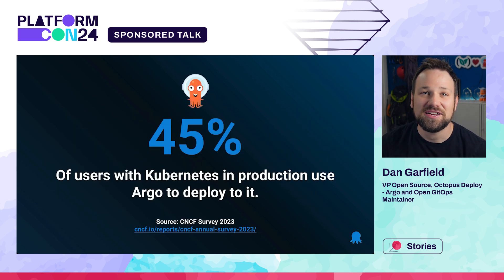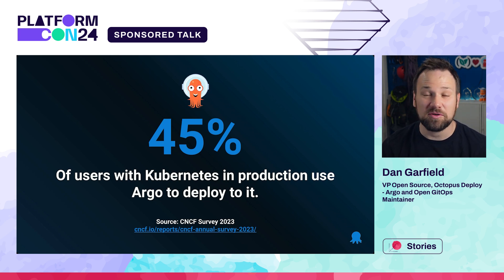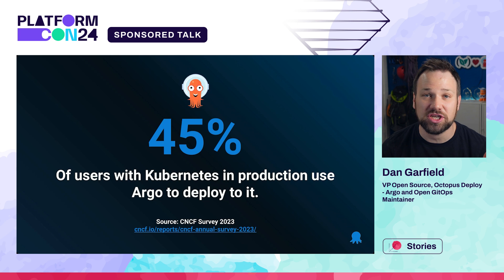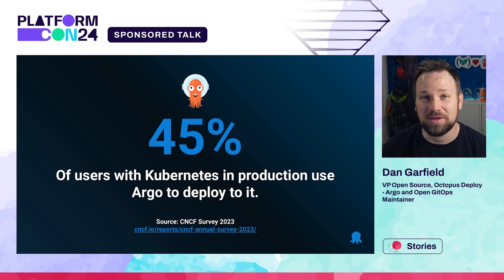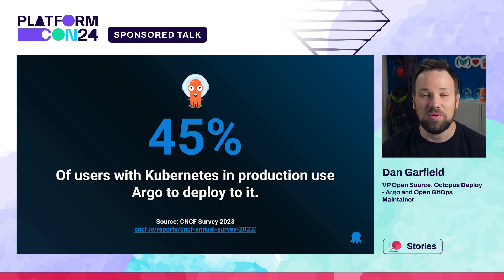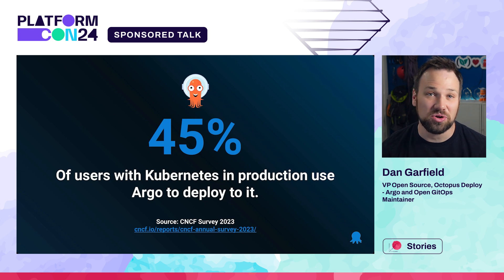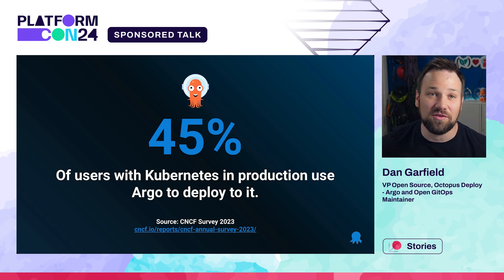It's been so successful that already a full 45% — almost half of anybody with Kubernetes in production — are using Argo to deploy their software to Kubernetes. So already half the industry has adopted this. It's a fairly new project, only a few years old. And the industry has clearly chosen this as really the standard way of delivering software to Kubernetes.